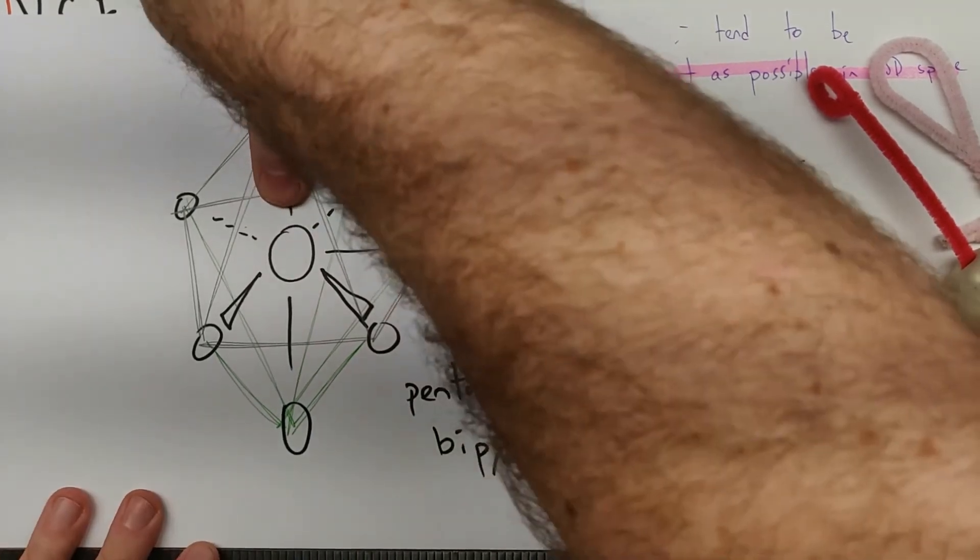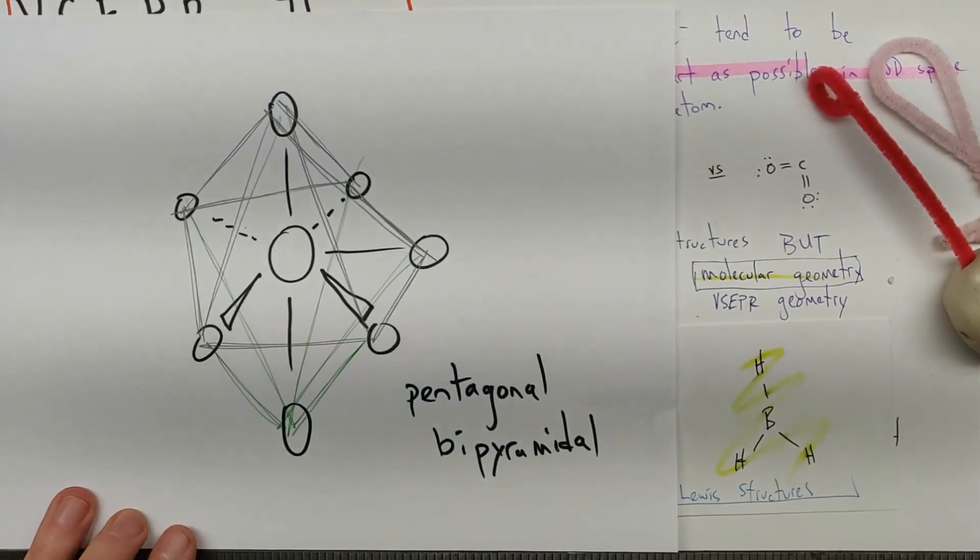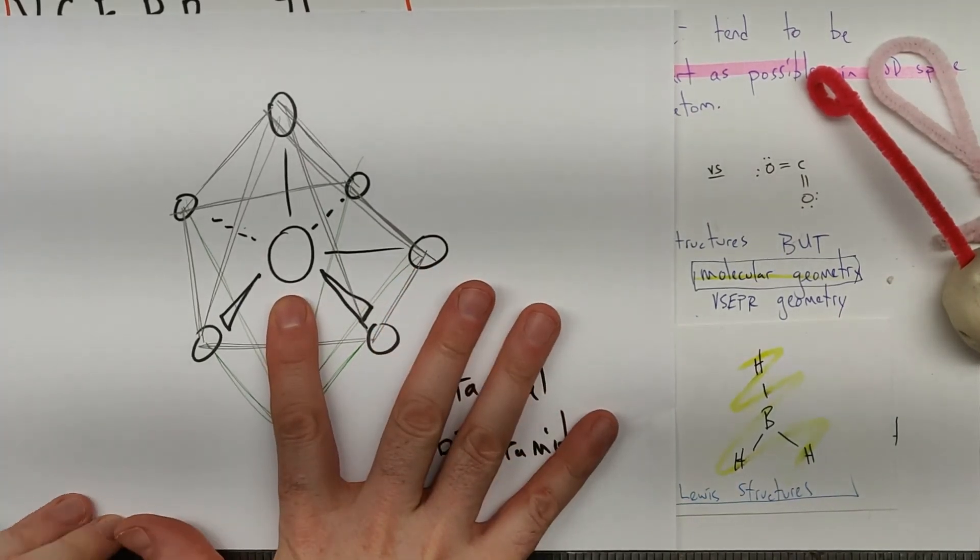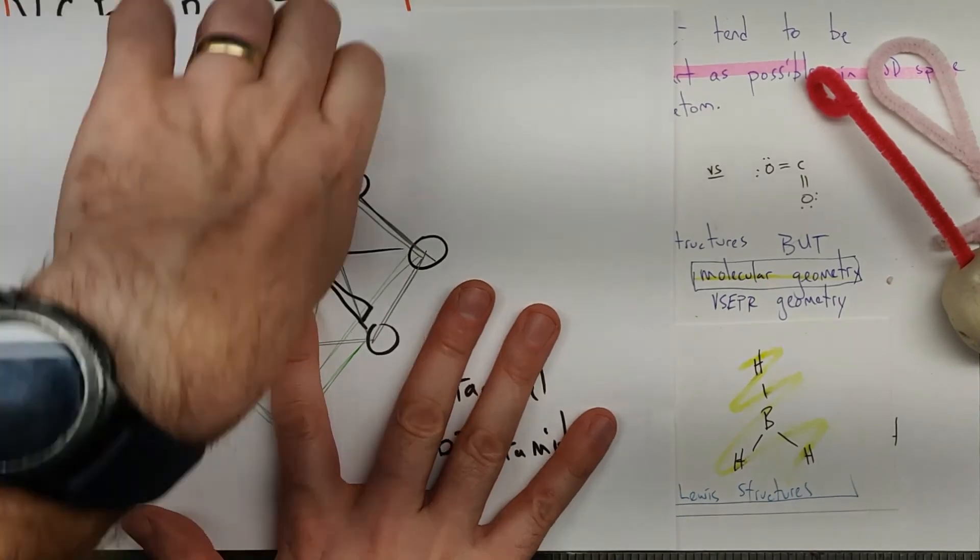And I will mention as we start to take things off of that, we're going to remove above and below first. So we'd end up with pentagonal pyramidal, pentagonal planar, etc.